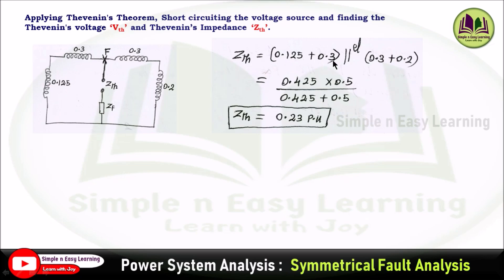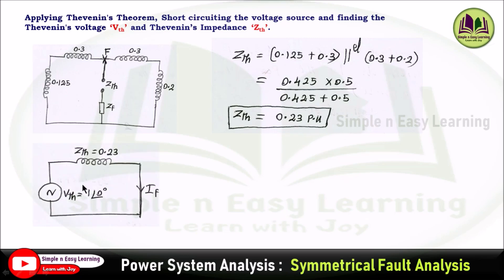So 0.125 + 0.3 = 0.425, and 0.3 + 0.2 = 0.5. These two are in parallel: using R1·R2 / (R1 + R2), we get Z_Thevenin = 0.23 per unit. The Thevenin voltage V_Thevenin = 1∠0°. This is the complete Thevenin equivalent circuit with V_Thevenin = 1∠0° and Z_Thevenin = 0.23 per unit.